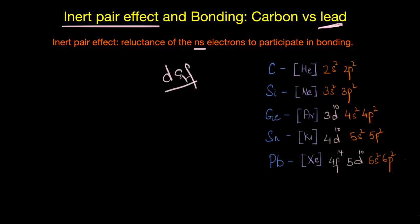Now we know that inert pair effect describes the reluctance or the inertness of the ns electrons to participate in bonding, and this happens because of the poor shielding effect of the intervening d and f orbitals. It becomes more pronounced as we go down the group, that means it's going to be more significant for lead.